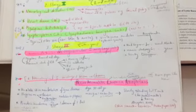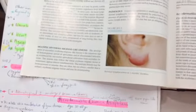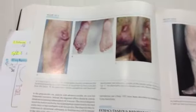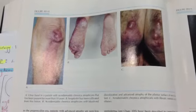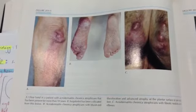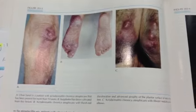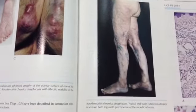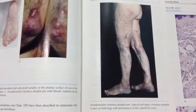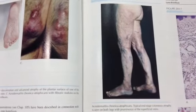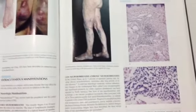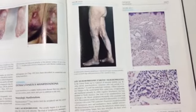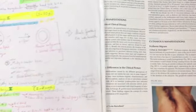So this is the third stage after weeks or years. And we will see here pictures of that acrodermatitis chronica atrophicans. So this is the third stage of Lyme disease.